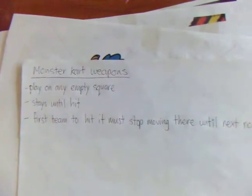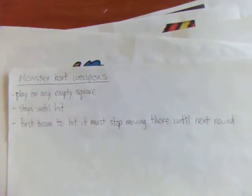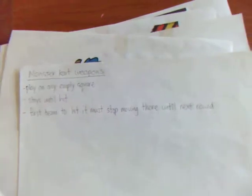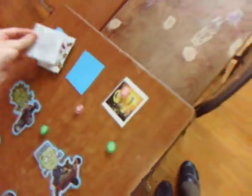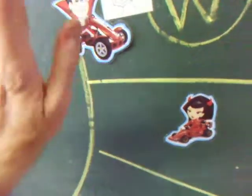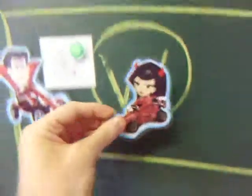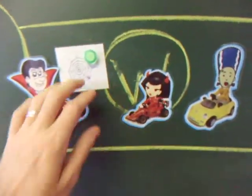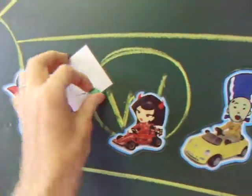The last weapon I created was the Spider Web. Like the Pumpkin Bomb, you can play it on any empty square and it stays there until it's hit. The first team to hit it must stop moving there until the end of the next round. So for example, if I play a Spider Web here, the next team to move, anyone who hits this square on the next go has to stop here. Even if this team rolls a six, you have to stop because you hit the Spider Web. They roll a five, but have to stop. So you cannot pass it. At the end of the go, when all the teams have moved, the Spider Web is removed, and the next round they can continue as normal.